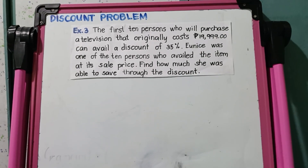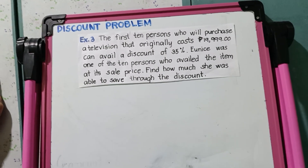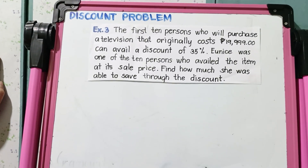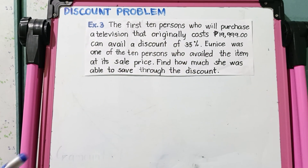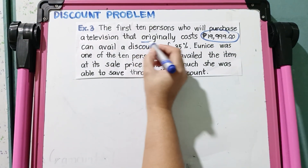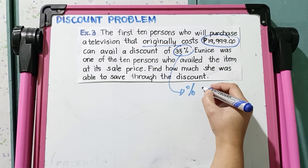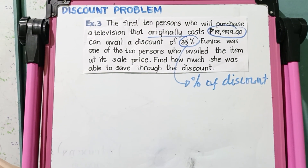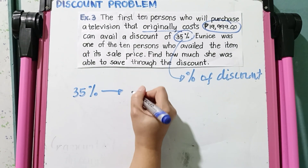Let's go now to the last problem. The first 10 persons who purchase a television that originally cost 19,999 pesos can avail a discount of 35%. Eunice was one of the 10 persons who availed the item at its sale price. Find how much she was able to save through the discount. The original price of the television is 19,999 pesos, and the rate of discount is 35%, which in decimal is 0.35 — just move the decimal point twice to the left.